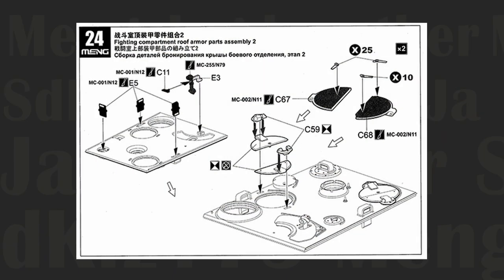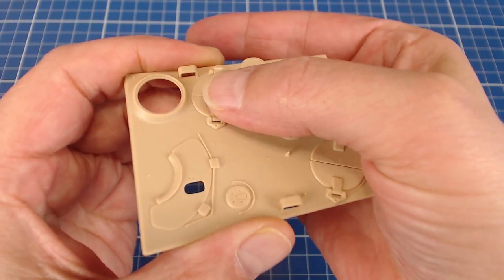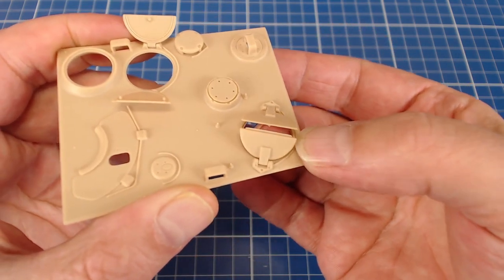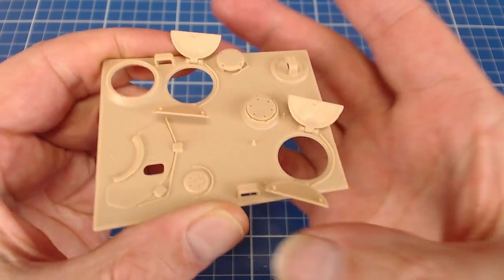One cool feature of this kit are the workable two-leaf hatches. If we're careful with our glue placement, the hatches open and close freely. The kit also features a moveable ball-mount hull machine gun, and the main gun traverses and elevates.